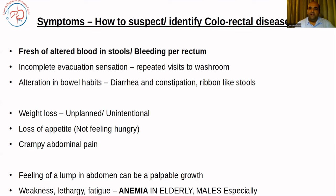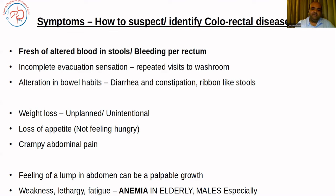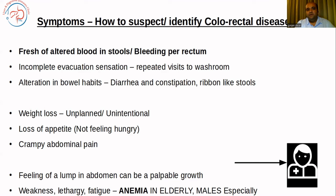A very important indicator is if a patient — especially elderly males — has anemia. You have to rule out colonic cancer, especially right-sided colonic cancer. Anemia in elderly males should not be missed. These are some of the symptoms which should prompt you to visit a doctor.